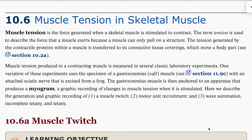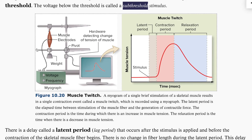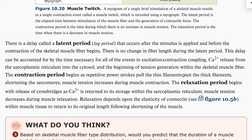Now that you have the graph drawn, let's visit the text to explain the different labels you'll put on that graph. Here is our experimental design: we have a muscle hooked up to electrodes, and we can control either the voltage sent to the muscle or the frequency — essentially how many times we send a zap to the muscle. The amount of tension produced by that muscle gets recorded on the graph.